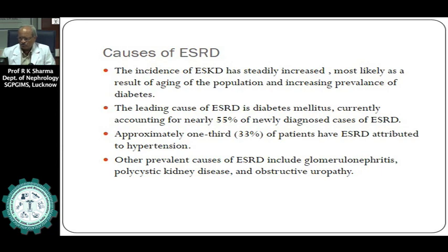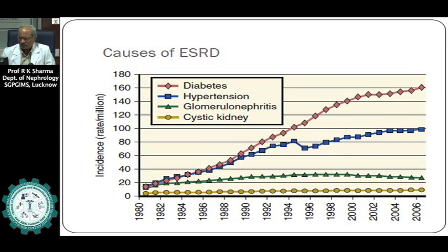Dialysis is of two types: hemodialysis and peritoneal dialysis. Hemodialysis is a life-saving procedure which sustains life for patients who have end-stage kidney failure. Approximately more than one million patients throughout the world are sustained on hemodialysis. Without availability of dialysis, most of these patients would die within a few weeks of stopping dialysis.